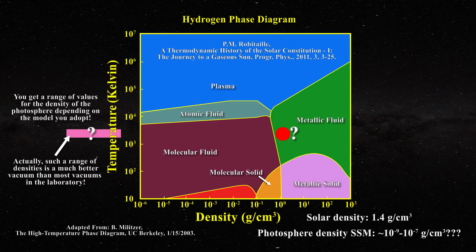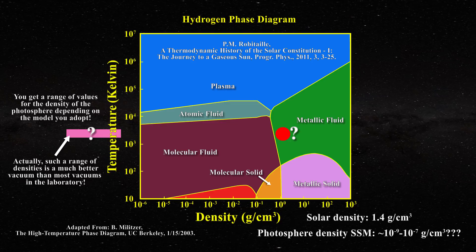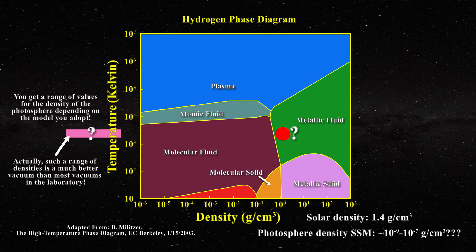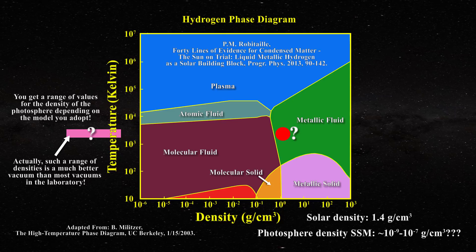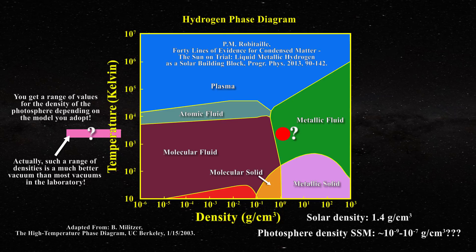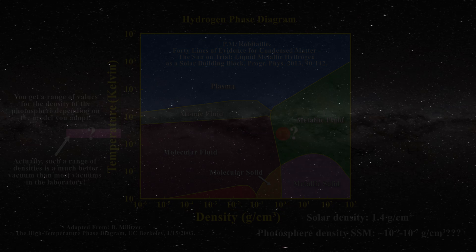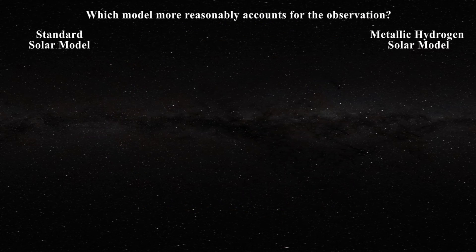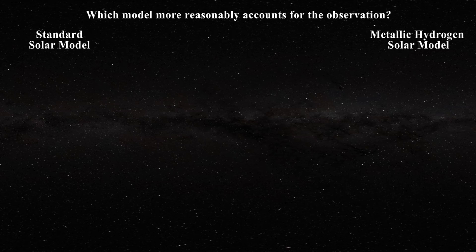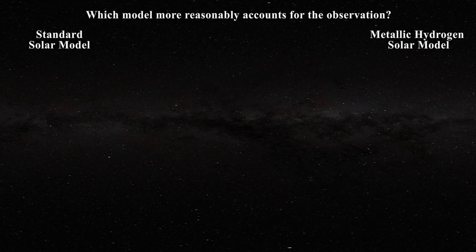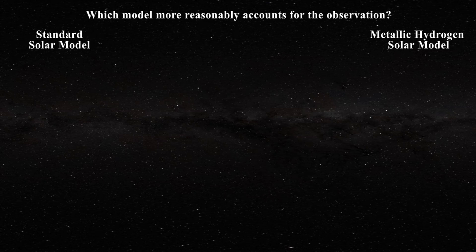In contrast, the evidence that the body of the sun is condensed matter is overwhelming, as I highlight in this paper. Let's review a few of the many proofs and keep score of what the observational evidence supports. The metallic hydrogen solar model or the standard solar model. Links to the videos where each of these are discussed are provided below.